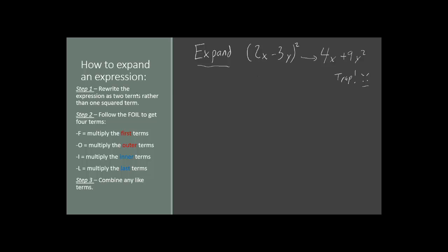What you have to do instead is rewrite the expression as two terms rather than one squared term. So what you should start with is 2x minus 3y times 2x minus 3y. Any time you have two terms with two things inside, you have to use what's called the FOIL Method.